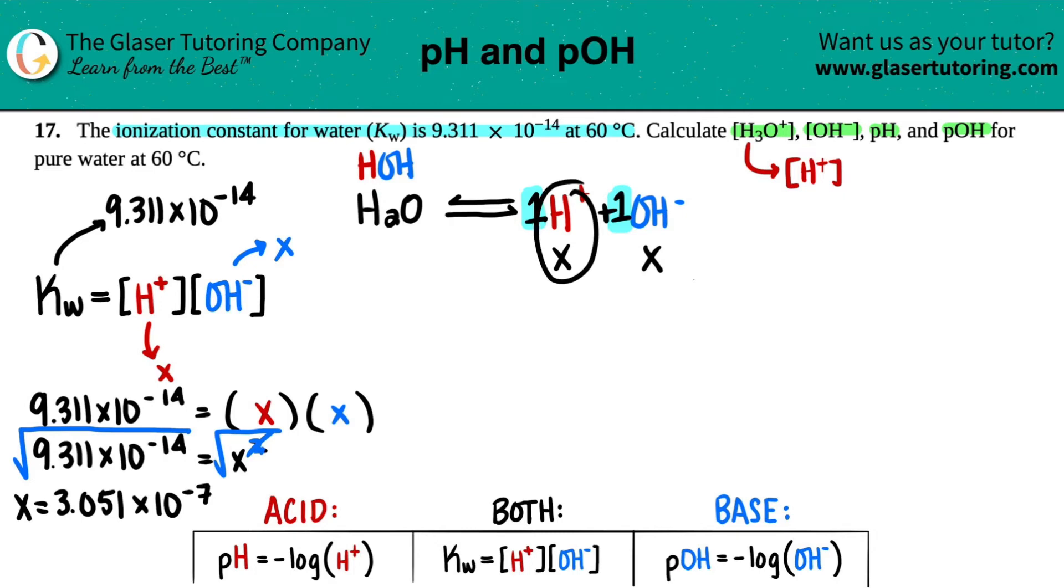Okay. H plus was X, and OH minus was X. So if I just maybe list it over here, and I put my little brackets, we have H plus and OH minus. They both were X, so they're both just going to be this number. So they're both going to be 3.051 times 10 to the negative 7th. And that's in units of molarity. Remember, brackets just means molarity, concentration. So 3.051 times 10 to the negative 7th molarity.